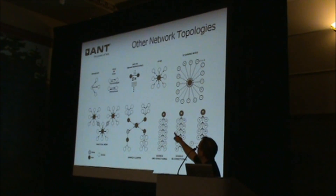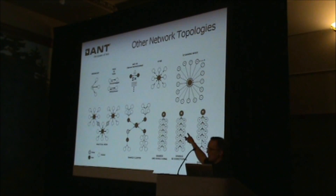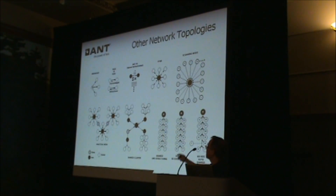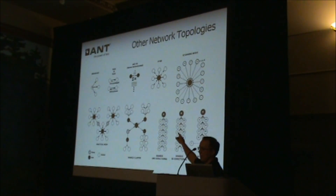Here we just have a bi-directional ANT channel for a peer-to-peer connection. ANTFS is actually a collection of ANT channels because it uses broadcast, acknowledged, and burst types of messages. This is a star topology, which is just a collection of bi-directional ANT channels talking to different nodes.